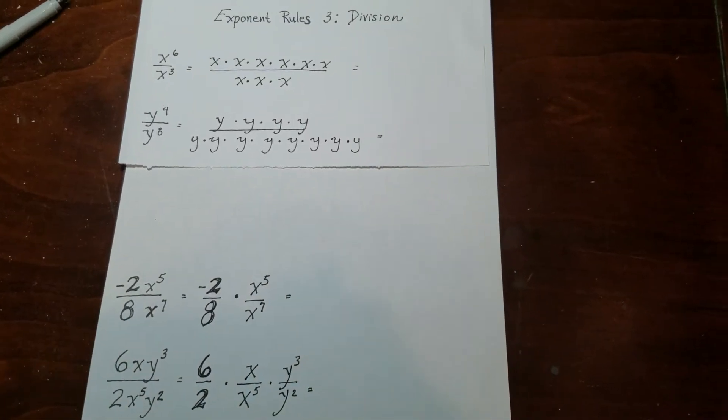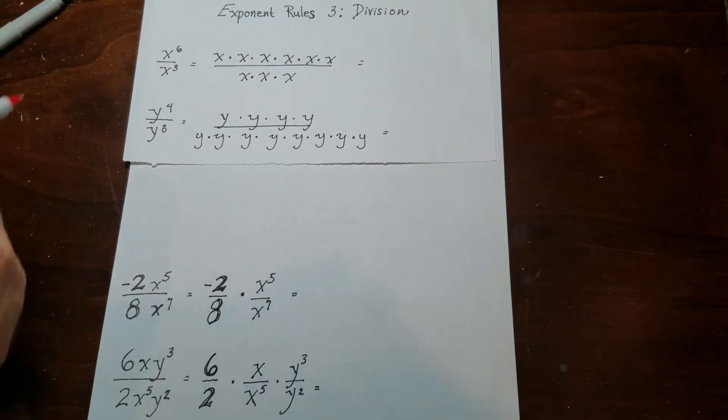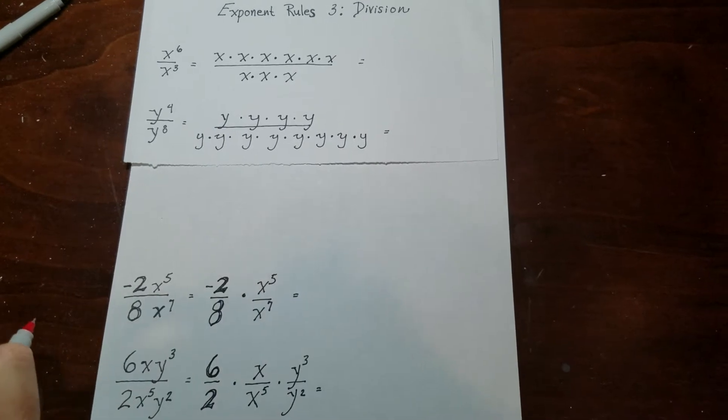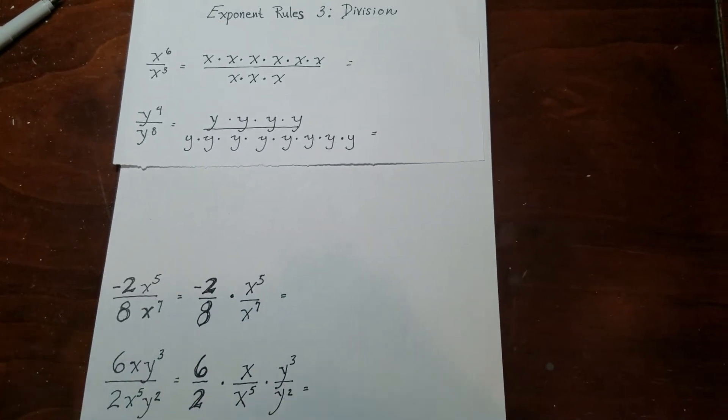Exponent rules, 3, division. So what we're going to do is look at this fraction right here. We have x to the 6 over x to the 3rd.